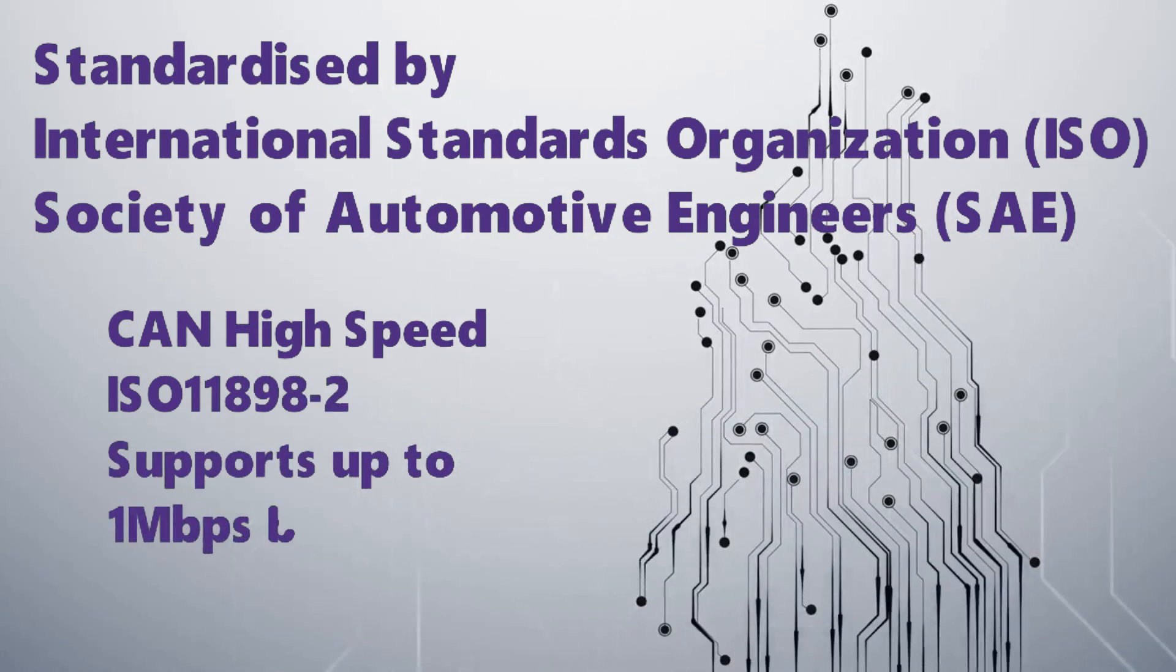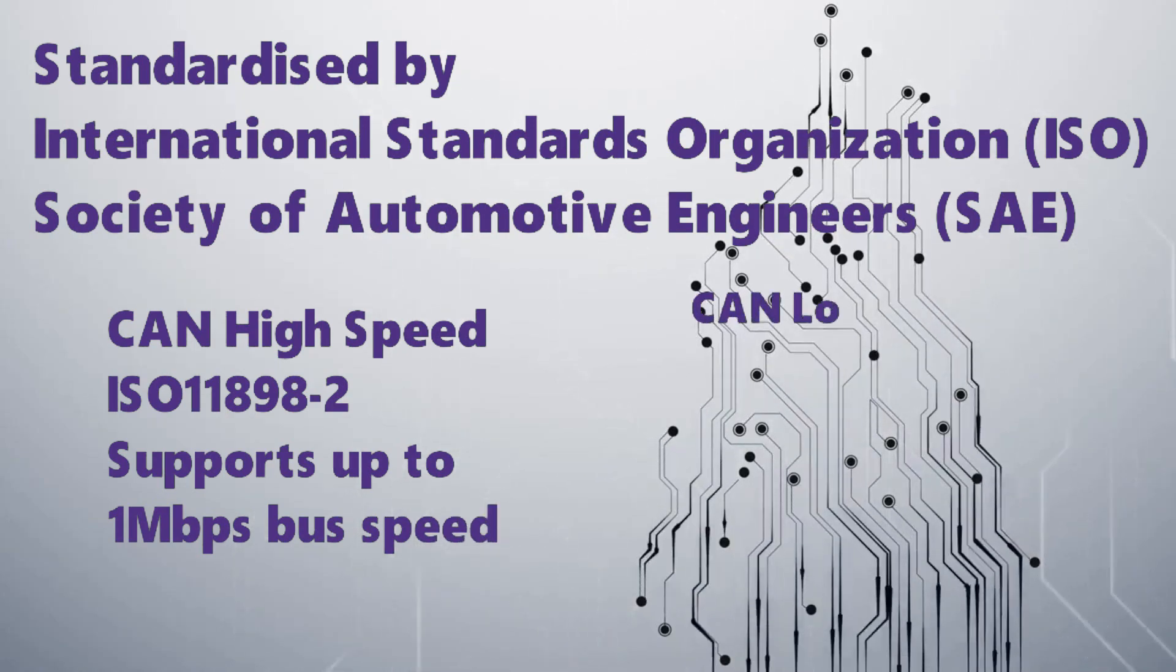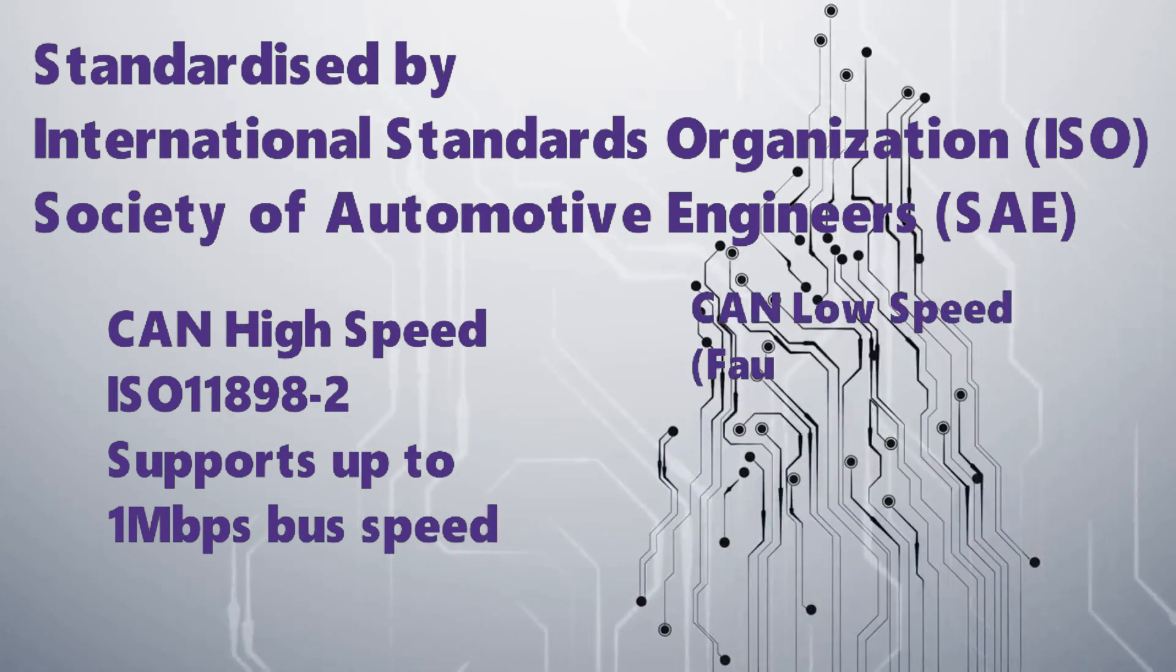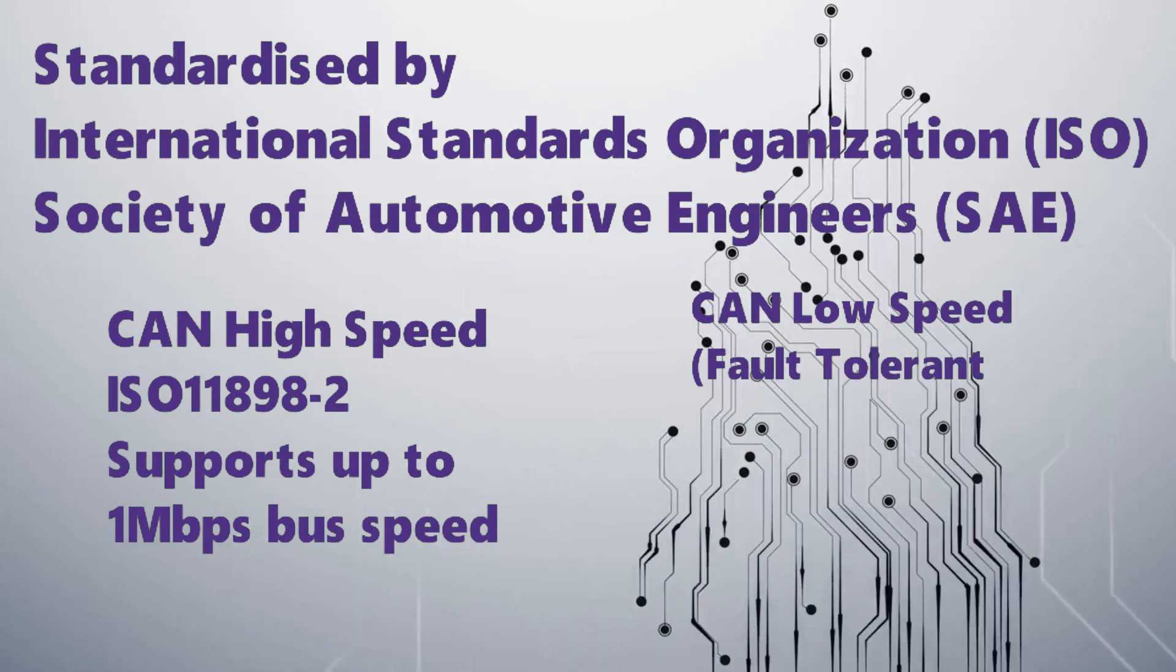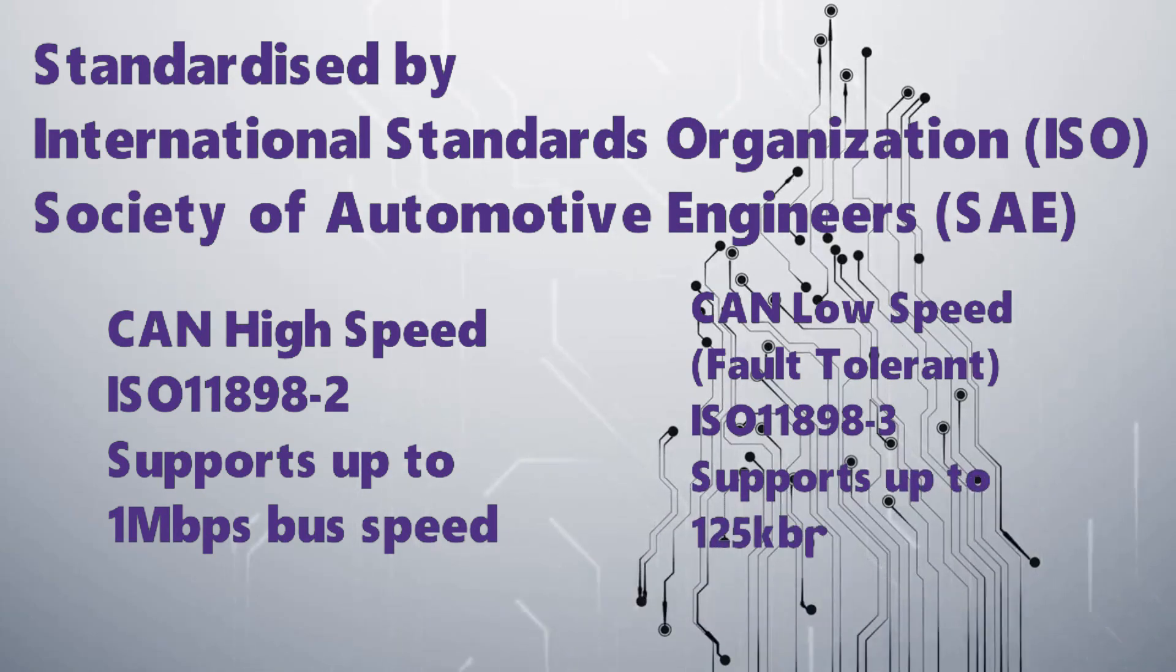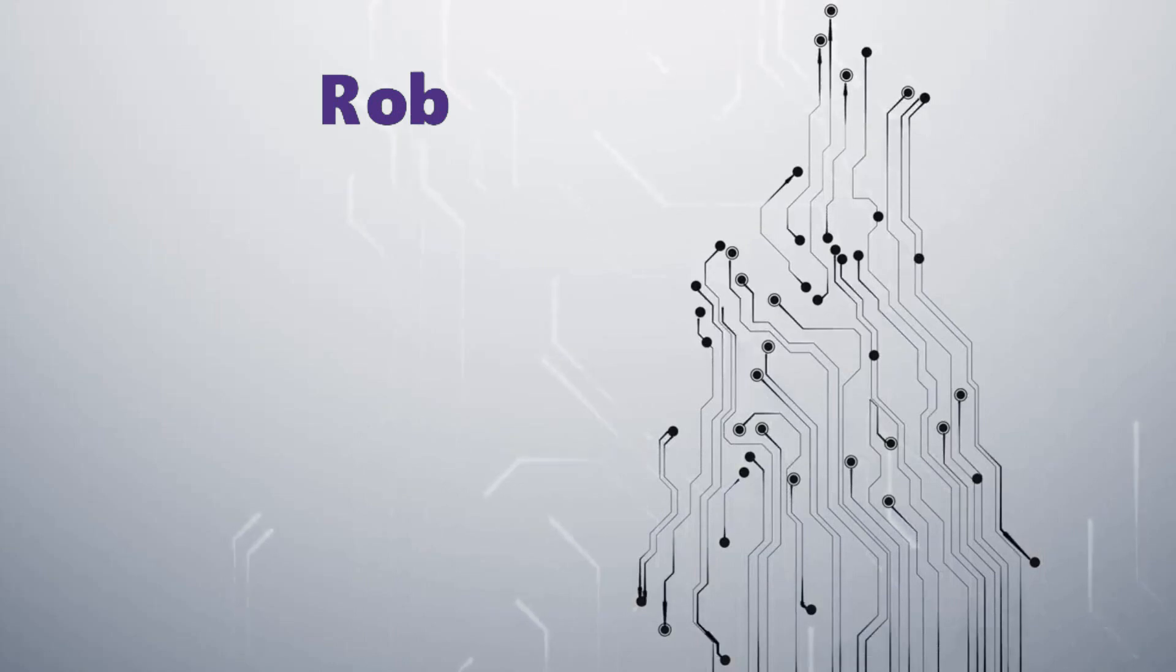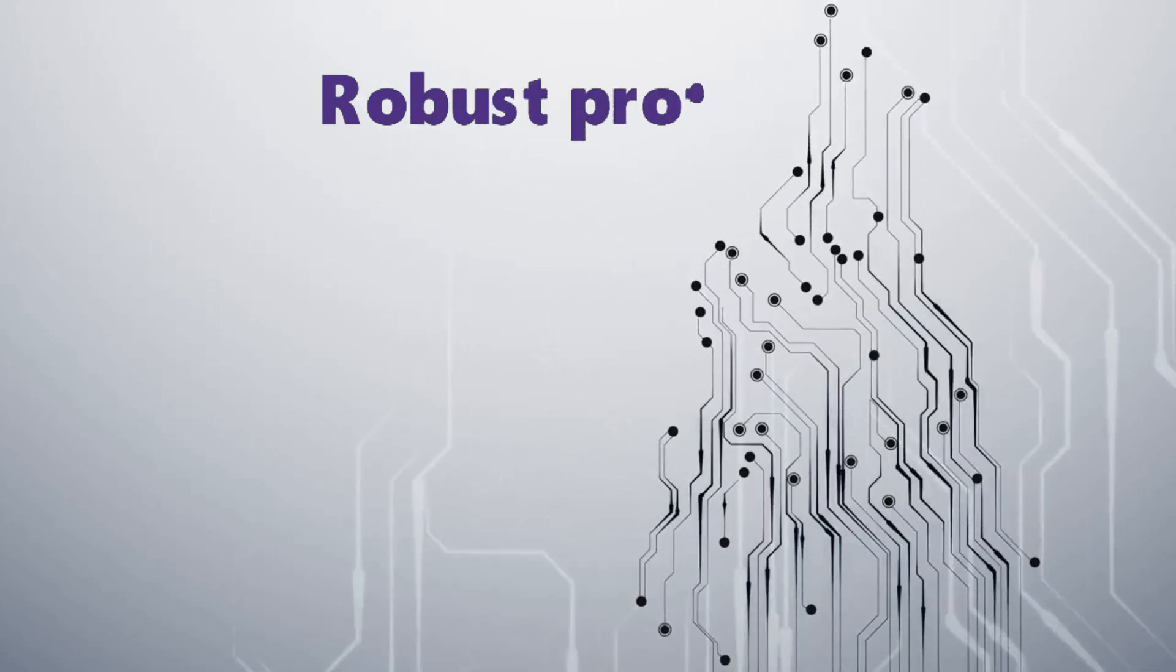CAN high speed is ISO 11898-2 and supports up to 1 Mbps plus speed. CAN low speed, also known as fault tolerance, is represented by ISO 11898-3 and supports up to 1 Mbps plus speed. CAN bus is a robust protocol.